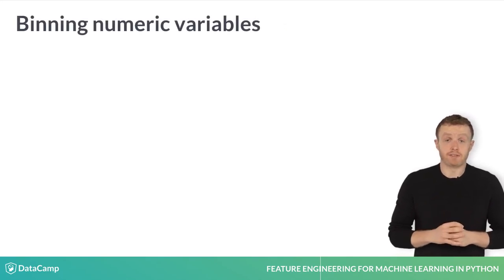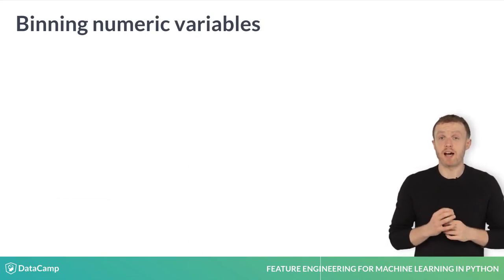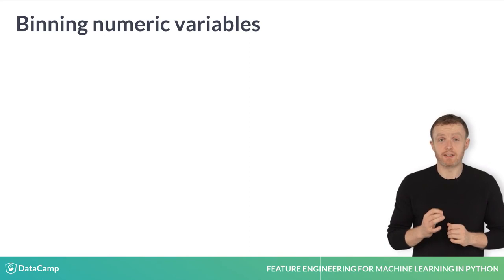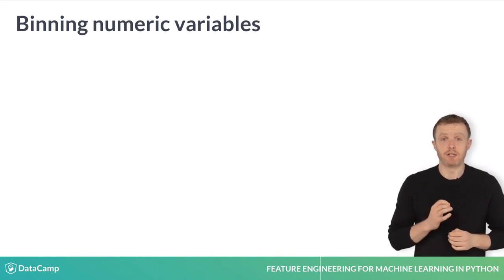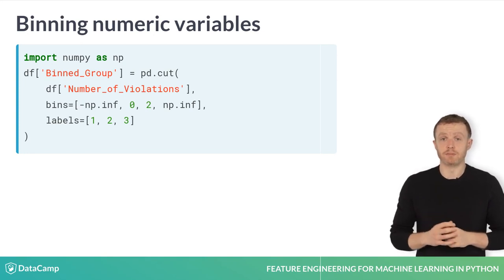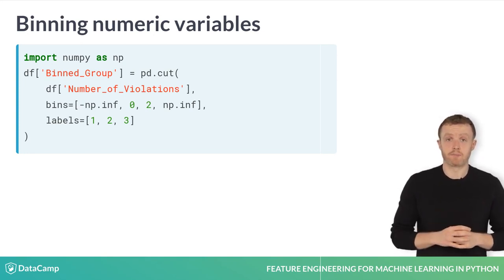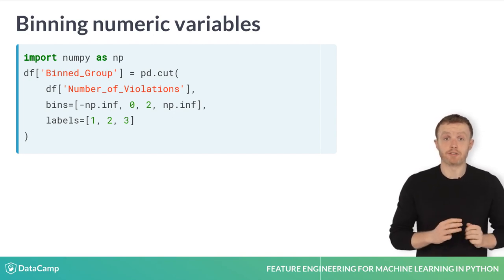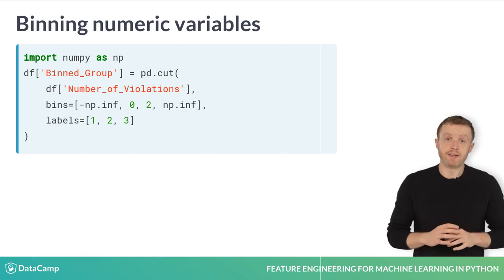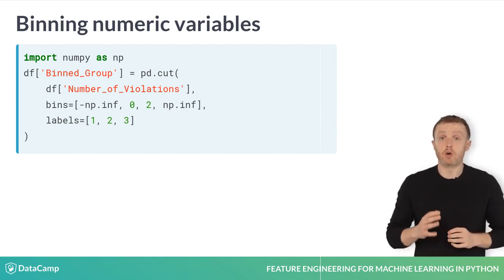An extension of this is perhaps you wish to group a numerical variable into more than two bins. This is often useful for variables such as age, wage brackets, etc., where exact numbers are less relevant than the general magnitude of the value. Consider the same dataset of restaurant health and safety ratings. This time, we will be creating three groups: group one for restaurants with no offences, group two for restaurants with one or two offences, and group three for all restaurants with three or more offences.